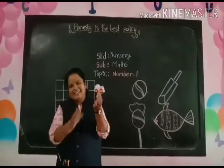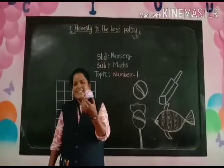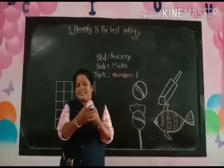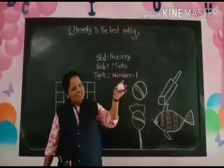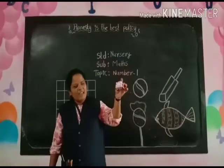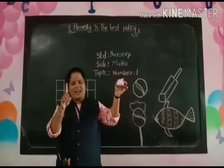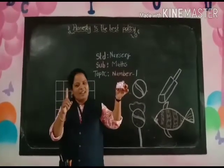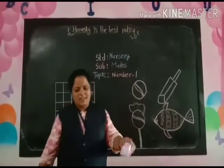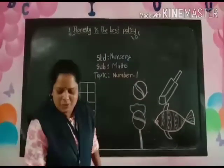Let's see here. What is this? This is a car. How many cars here? One car. How many cars here? One car. Okay children, do you understand?